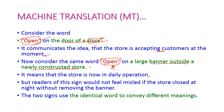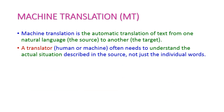A newly constructed store means it was not previously closed and today morning opened — because now only the store got inaugurated. So from today onwards, the store will come into functioning and start accepting customers. Hence, these two uses of 'open' are entirely different. Before translating content from one language to another, first we have to understand the concept. The translator, whether human or machine, needs to understand the actual situation described in the source, not just the individual words. If you translate word by word, you will not get the actual concept.